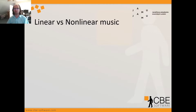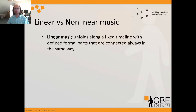So before we start talking about adaptive music, let's focus on linear and non-linear music. My definition is that linear music unfolds along a fixed timeline with defined formal parts that are connected always in the same way — meaning you have a timeline which starts at point A and ends at point B and you basically go through this timeline.